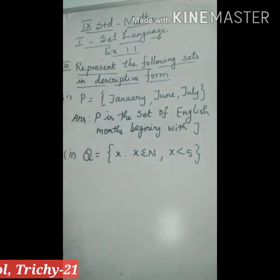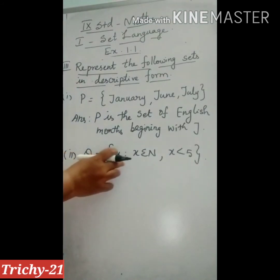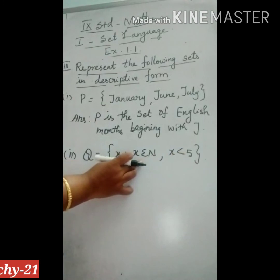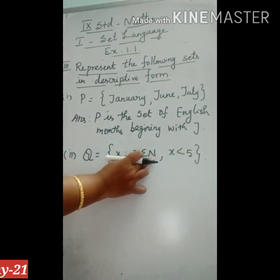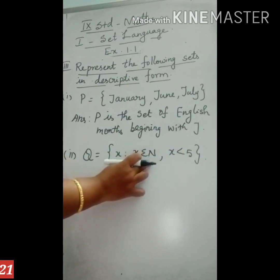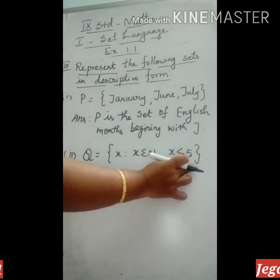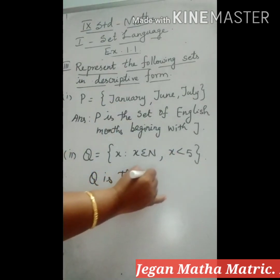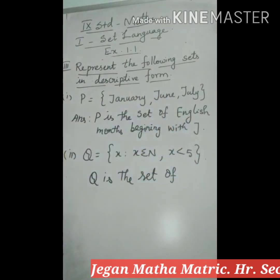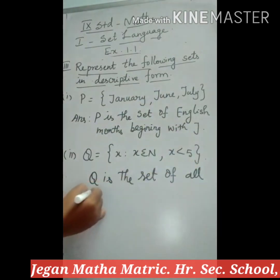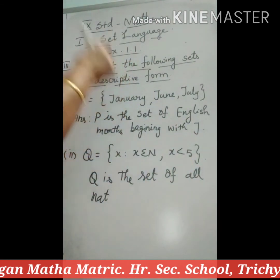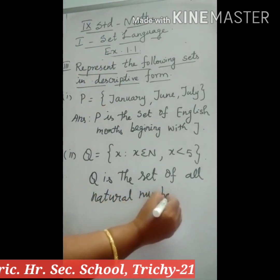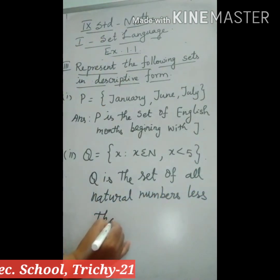The next question is: Q = {X such that X belongs to N, X < 5}. What is N? N denotes natural numbers. Another condition is X less than 5. So you have to represent in words — Q is the set of all natural numbers less than 5. That is the descriptive form.